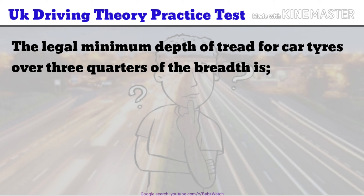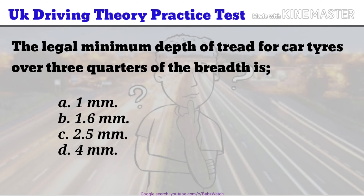UK Driving Theory Practice Test Question 21 of 50. The legal minimum depth of tread for car tyres over three-quarters of the breadth is: A. 1 mm. B. 1.6 mm. C. 2.5 mm. D. 4 mm. The correct answer is B. 1.6 mm.